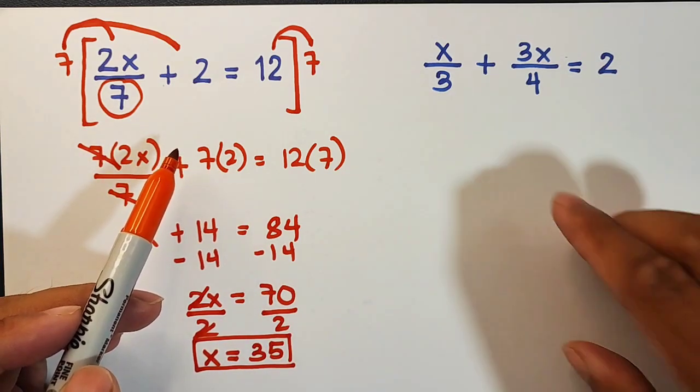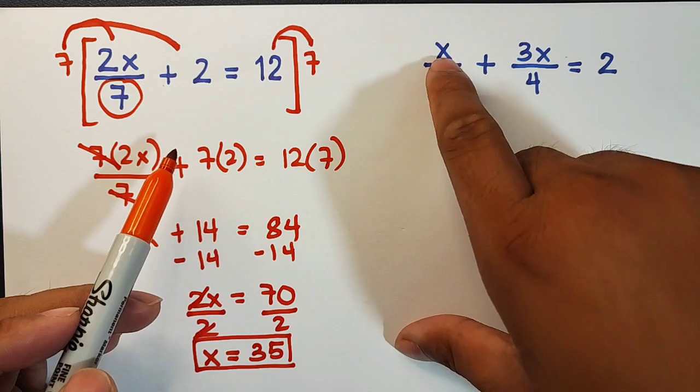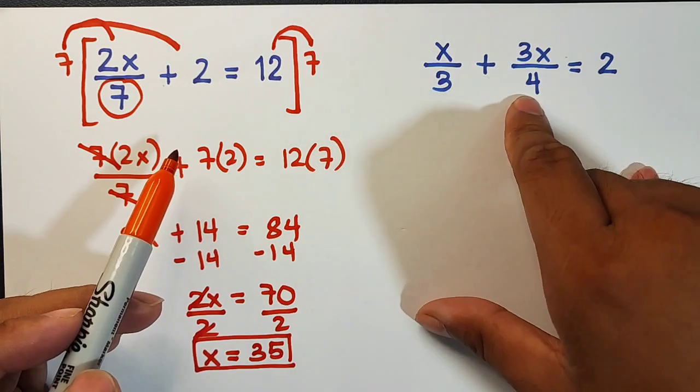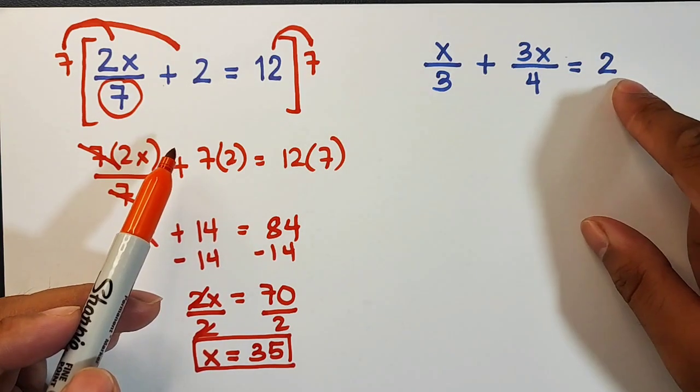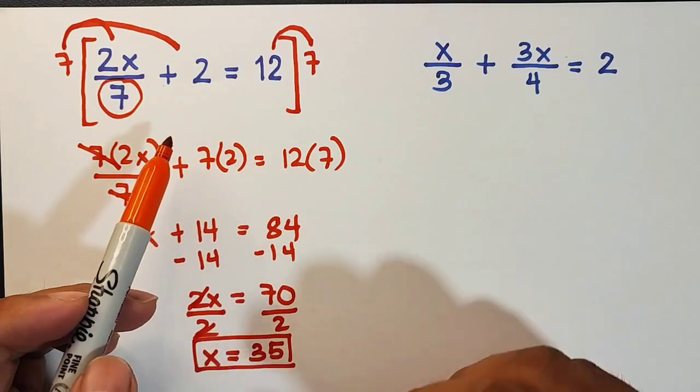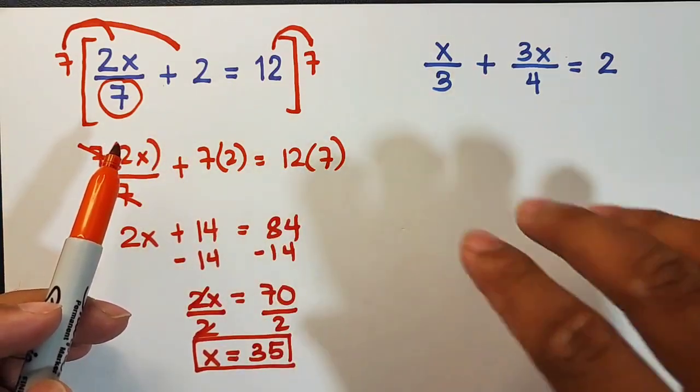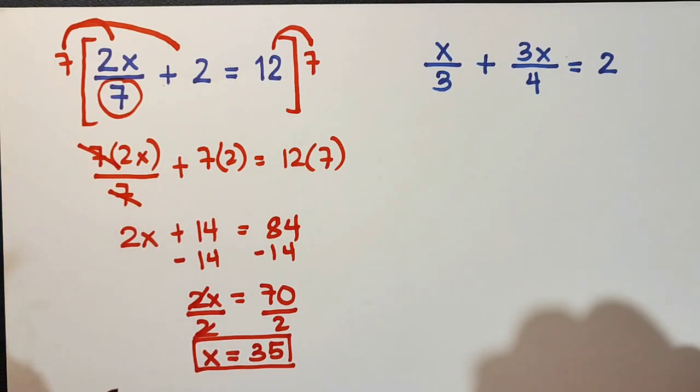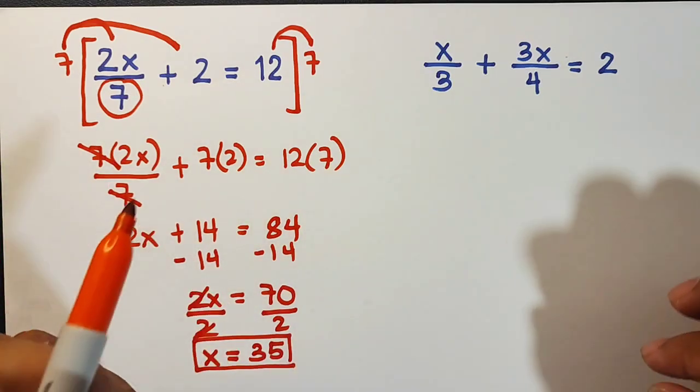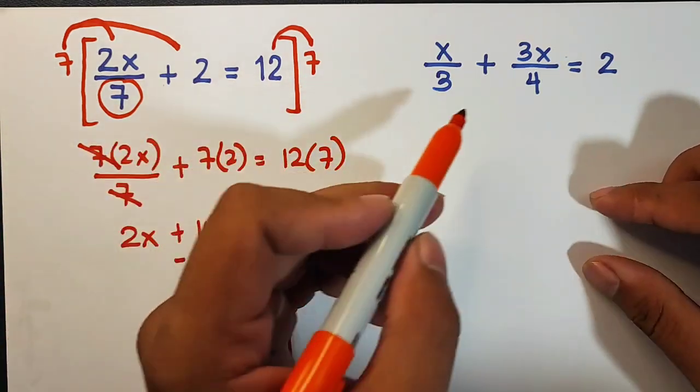Let's move on with item number 2. For item number 2, we are given x over 3 plus 3x over 4 is equal to 2. As you can see, compared to number 1, we only have 1 denominator—here we have 2 denominators, but don't worry, this one is not so difficult to solve.